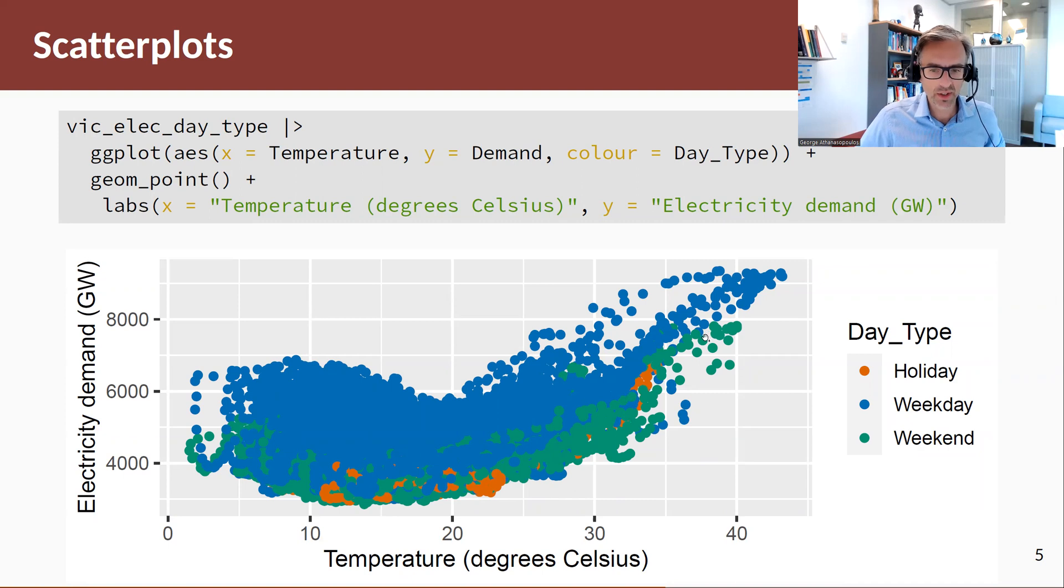Hence what we see here is that the green weekends are at the bottom, lower demand for weekends compared to weekdays, but the shape of the demand seems to be the same. So as temperatures increase, demand of electricity on weekends increases. As temperatures drop again, demand of electricity increases. And the holidays are clustered together with weekends, seem to behave similarly to weekends.